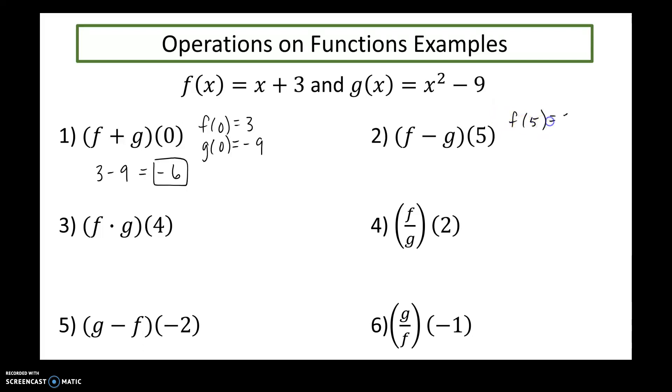f of four is seven, g of four, 16 minus nine is also seven, so when I multiply those function values together, 49. f of two is five, g of two is four minus nine, negative five, so when I divide those, my final answer would be negative one.